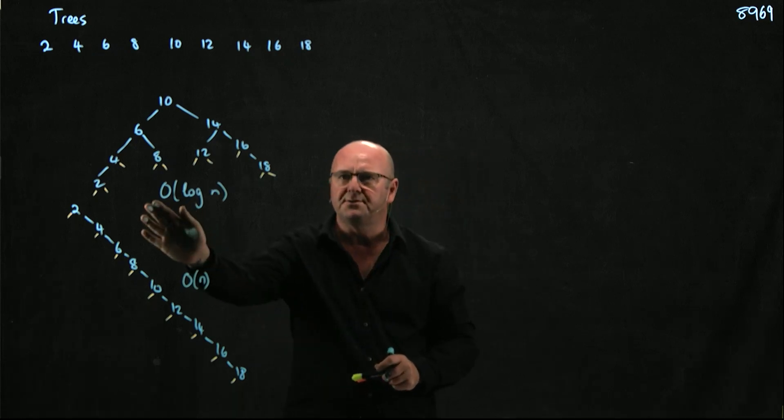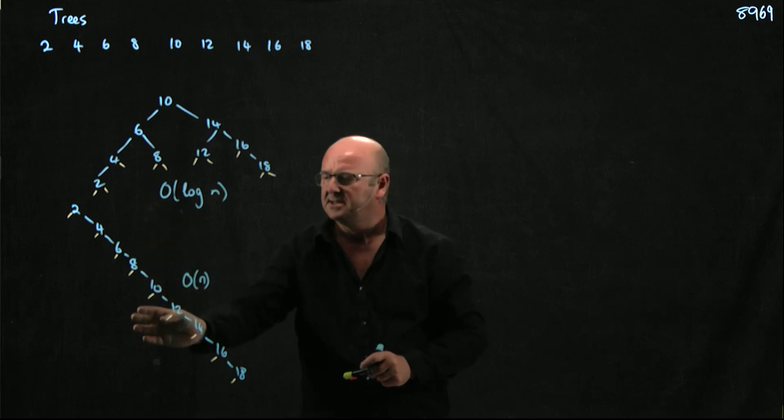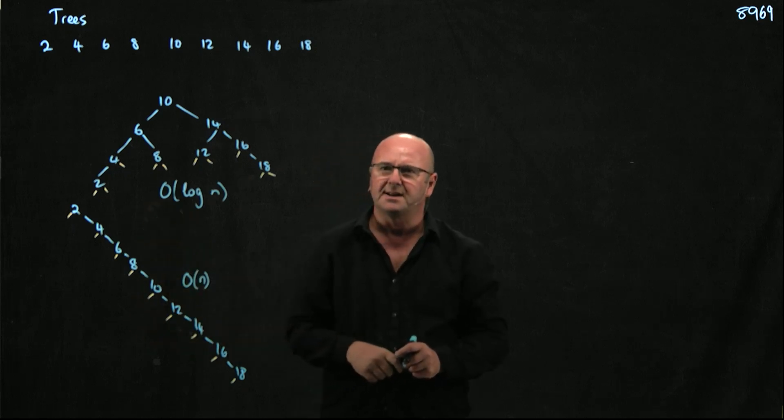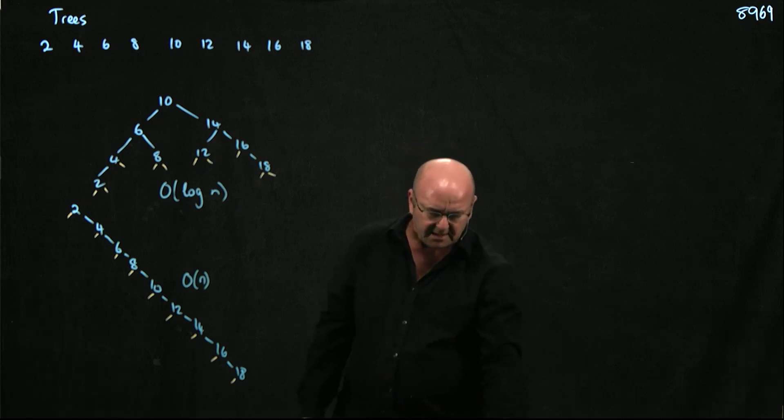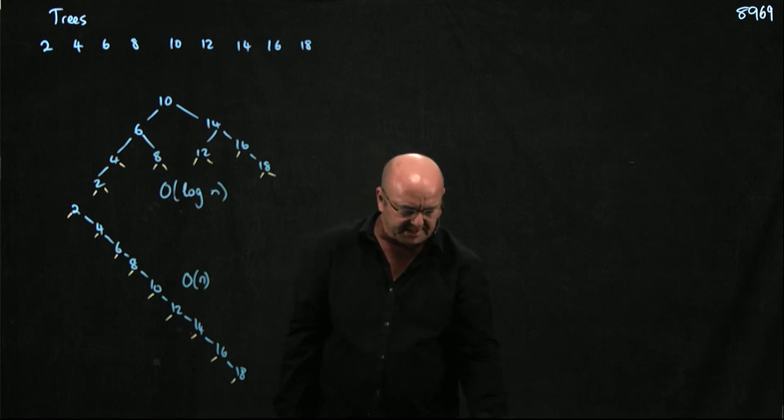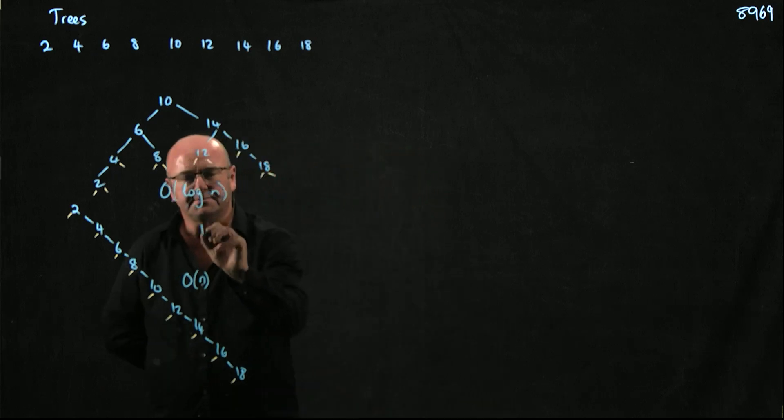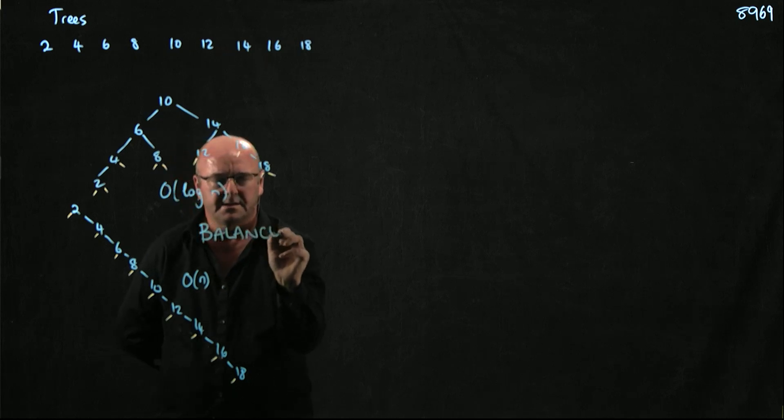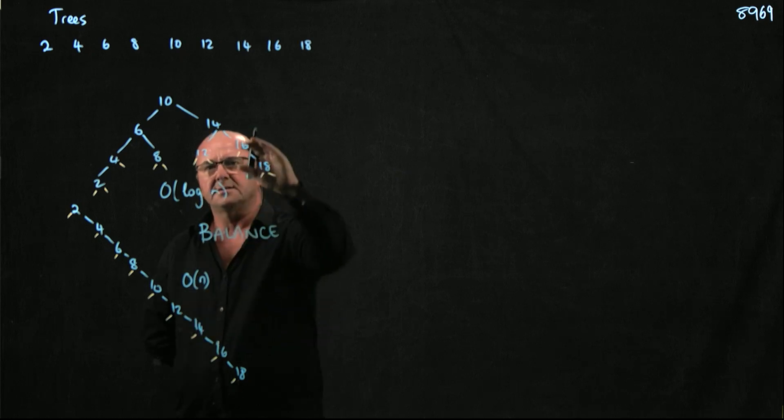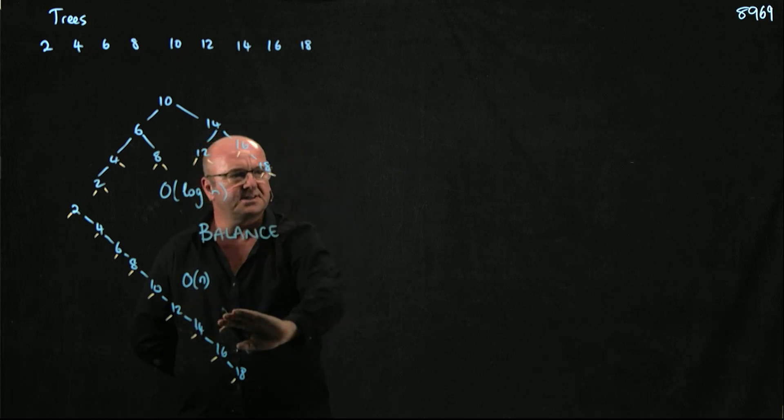So we want our trees to be beautiful binary search trees, and not to be crappy linked lists, because we've already written crappy linked lists. And the difference between those two things is called balance. So this tree is balanced and this tree is not balanced.